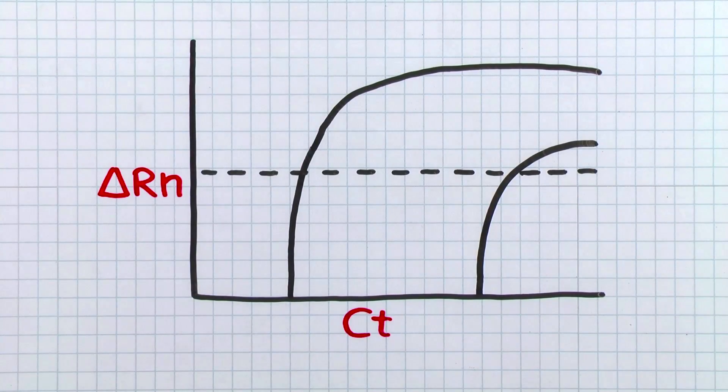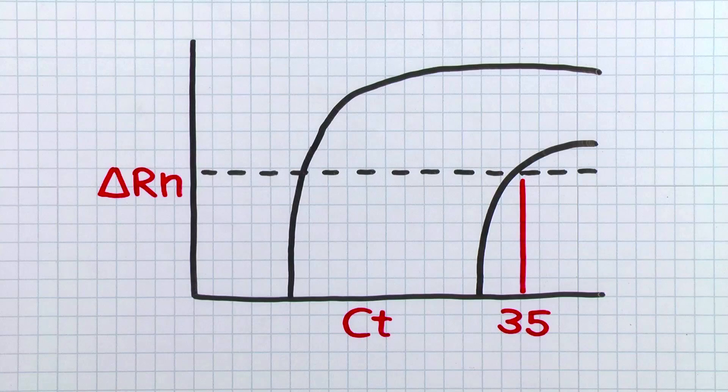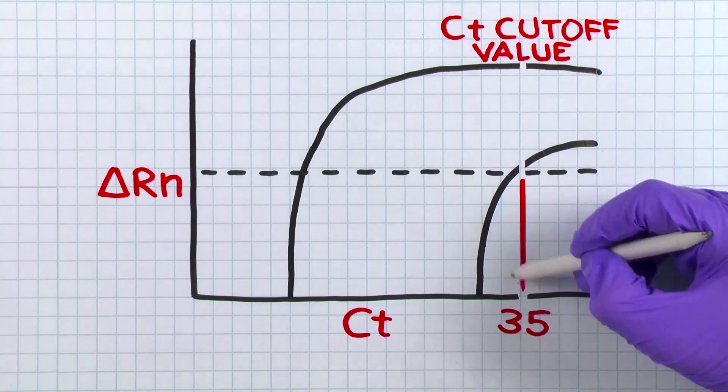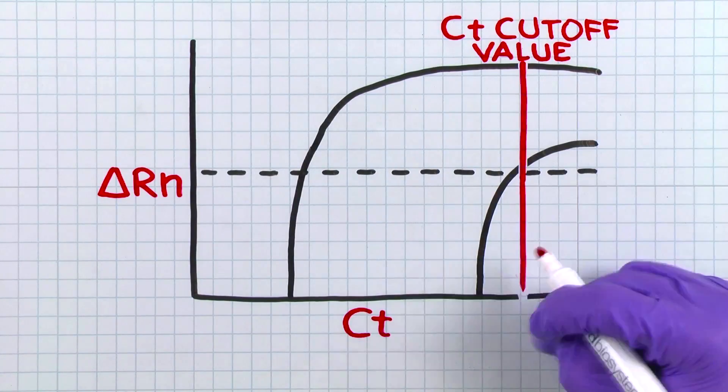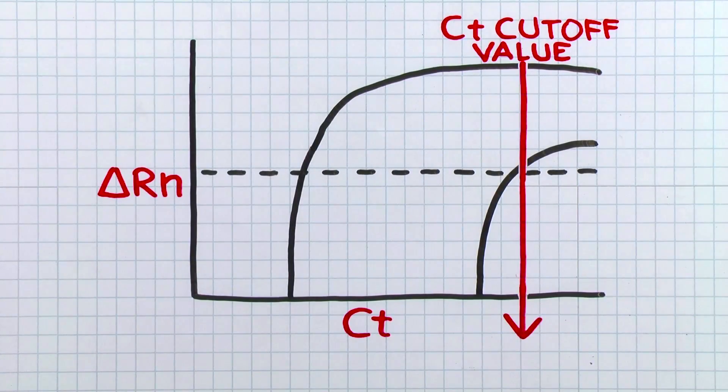If the CT value gets too high, say a CT of 35 in a 96-well plate, it can be difficult to distinguish real signal from background. For this reason, many researchers will employ a CT cutoff and not use any data above that CT value.